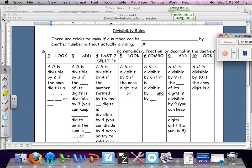So the divisibility rules. There are tricks to know if a number can be evenly divided. Any number can be divided by any other number. It's whether or not it can be evenly divided that we're investigating by another number without actually dividing.